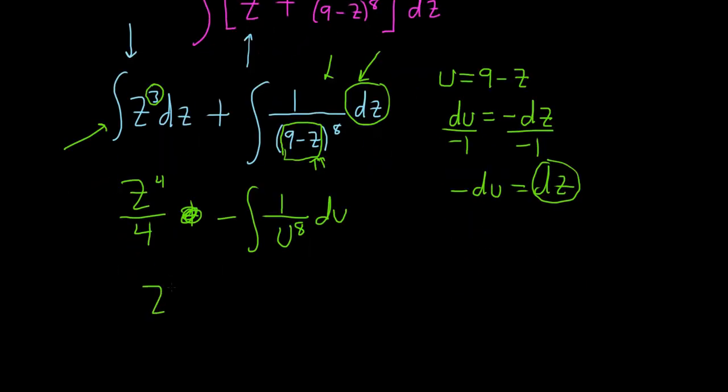So this is z to the 4th over 4. Now we can bring this upstairs. And when you do that, it makes the exponent negative. And the reason we do that is because we want to apply the power rule. Remember, you can apply the power rule when it's something to a power.